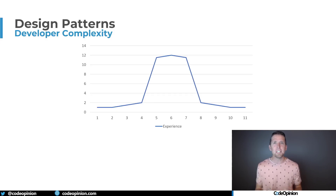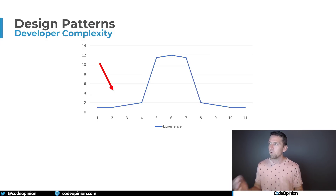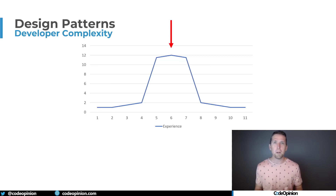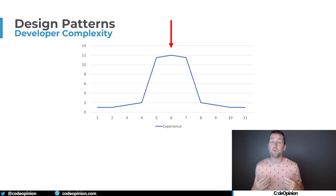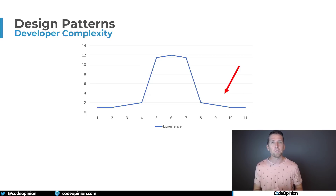This is what I mean by the bell curve. At the very beginning, with limited experience, you're writing simpler code — not necessarily complex, though it's usually highly coupled. Then for some reason it goes overboard: complexity overboard, applying patterns you don't need. And then at some point you come back down, realizing: let's get back to simpler times, but now with the gained experience of what not to do in terms of coupling and cohesion.